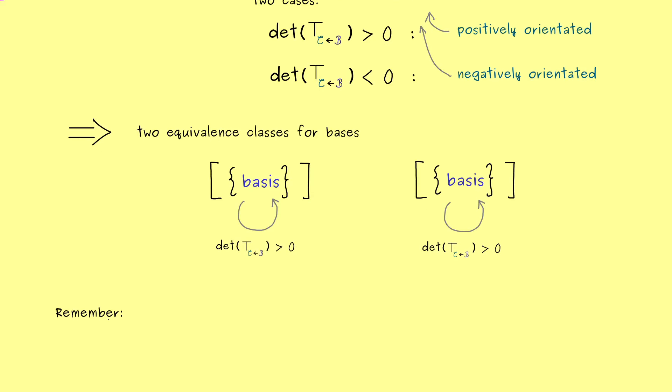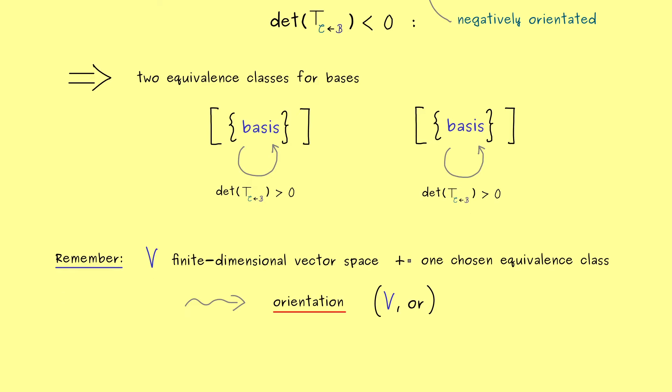For the rest of the video, remember: if we have a vector space and choose one of the two equivalence classes, then we have an orientation. For example, the positive orientation for R^n is the equivalence class where the standard basis is inside. Hence, we have an oriented R^n. In general, the common notation is the vector space together with OR, the orientation. Usually one calls the chosen orientation positive and the other one negative.